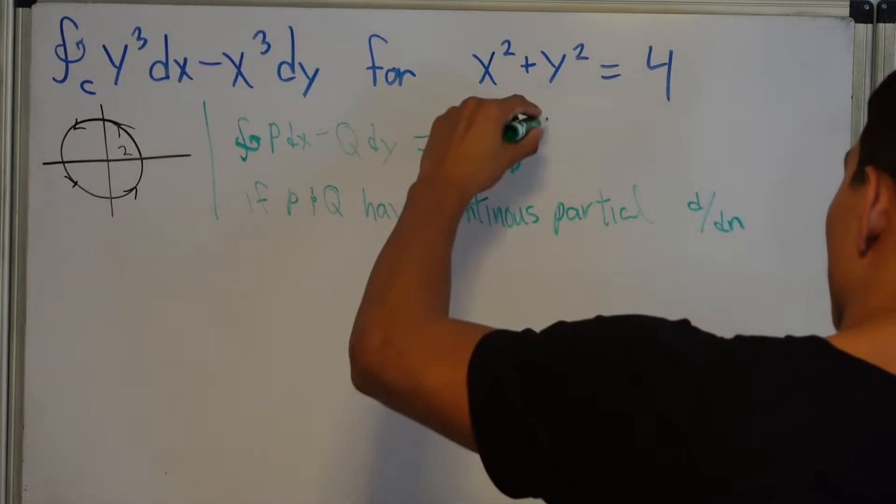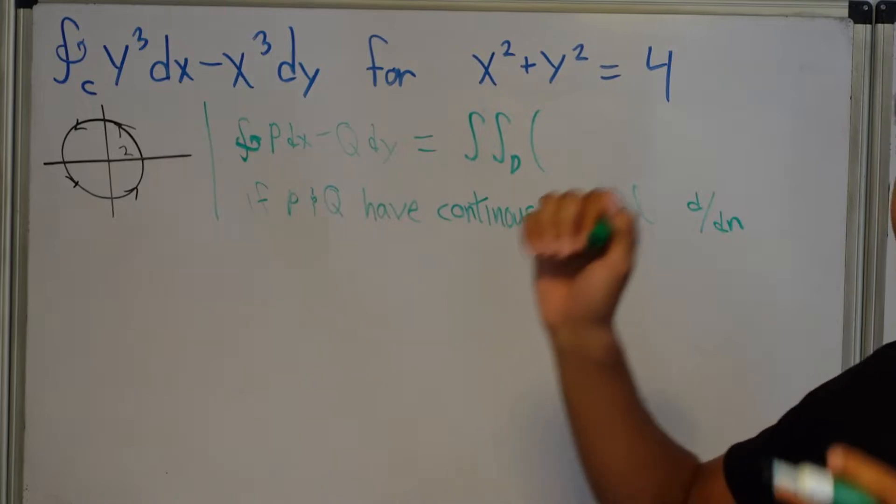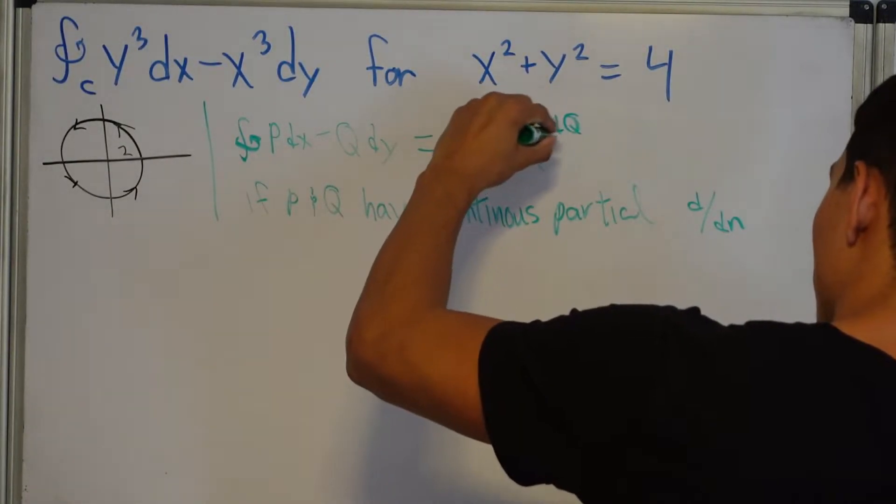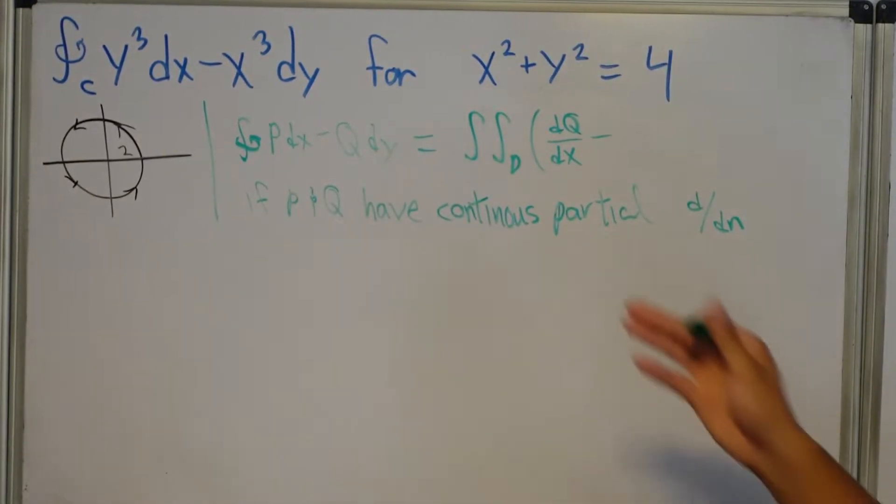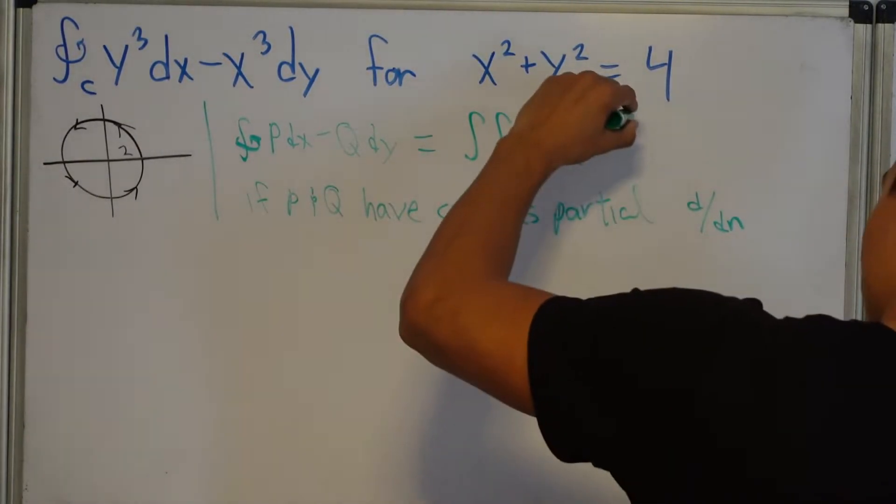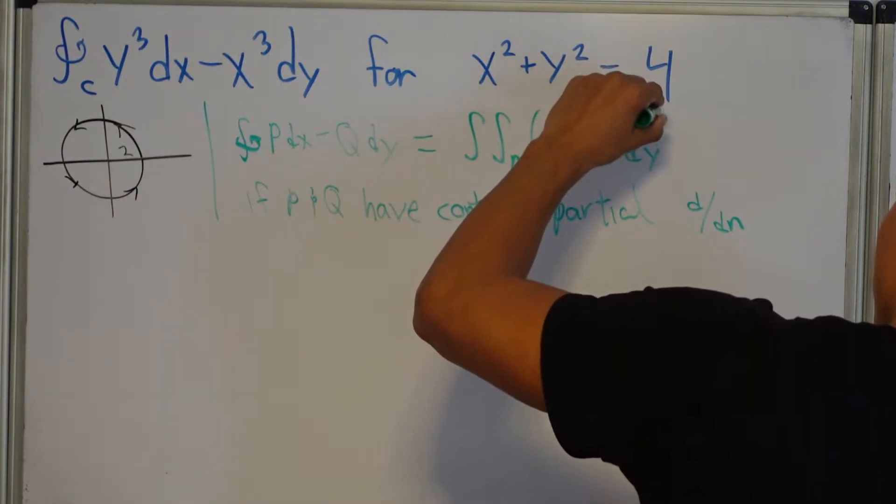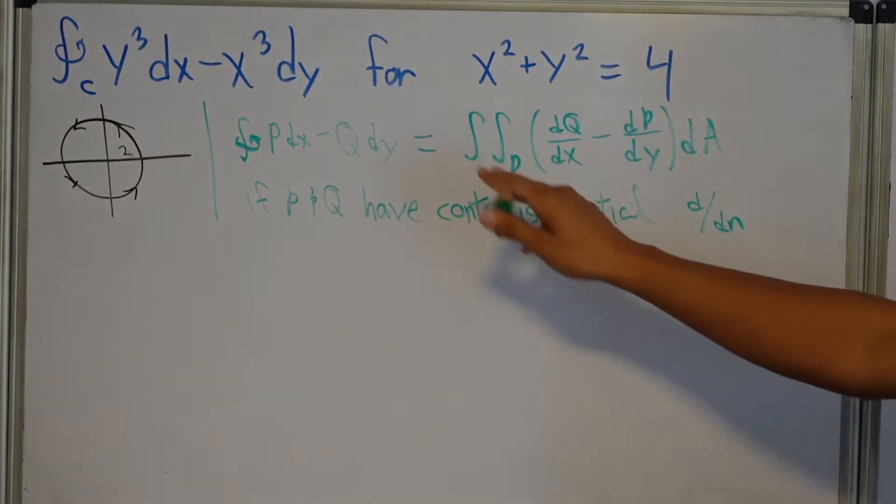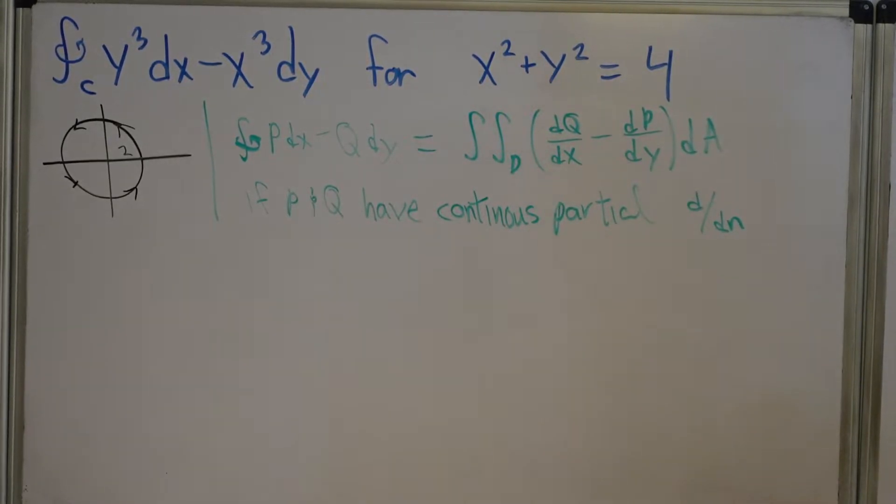And the formula goes like this. So it's going to be Q with respect to X. So dQ/dX minus P, dP/dY, dA. You can think of it as opposites, right? That's how you can remember it. But that's Green's Theorem right here.